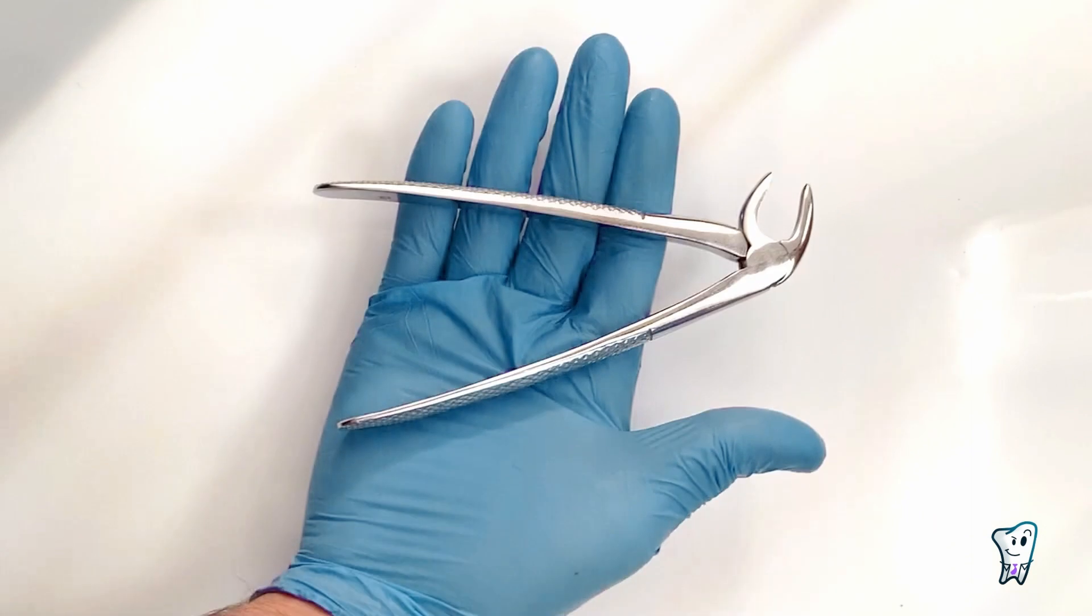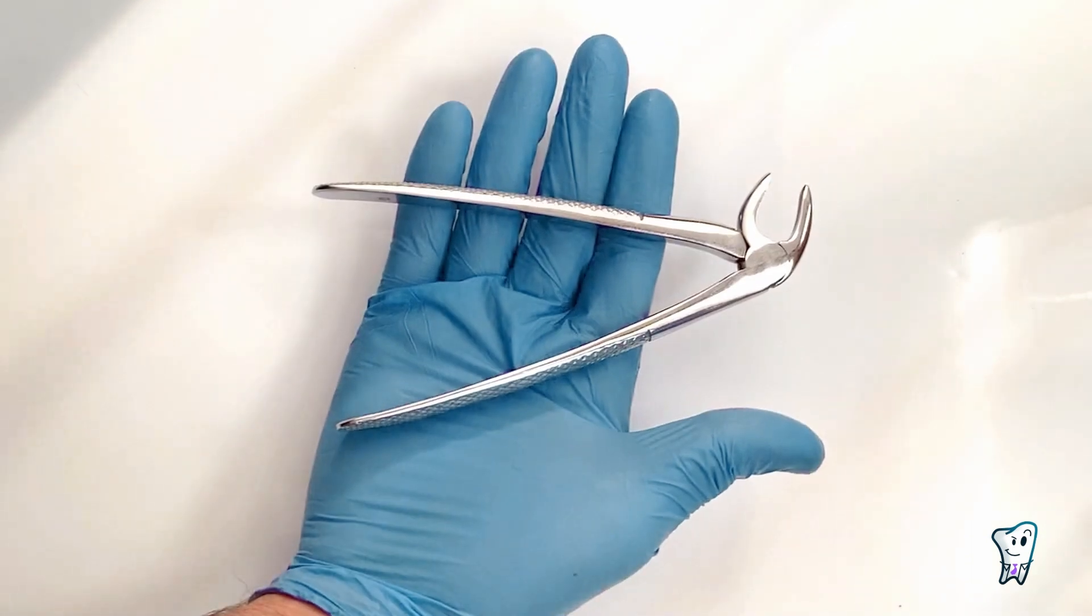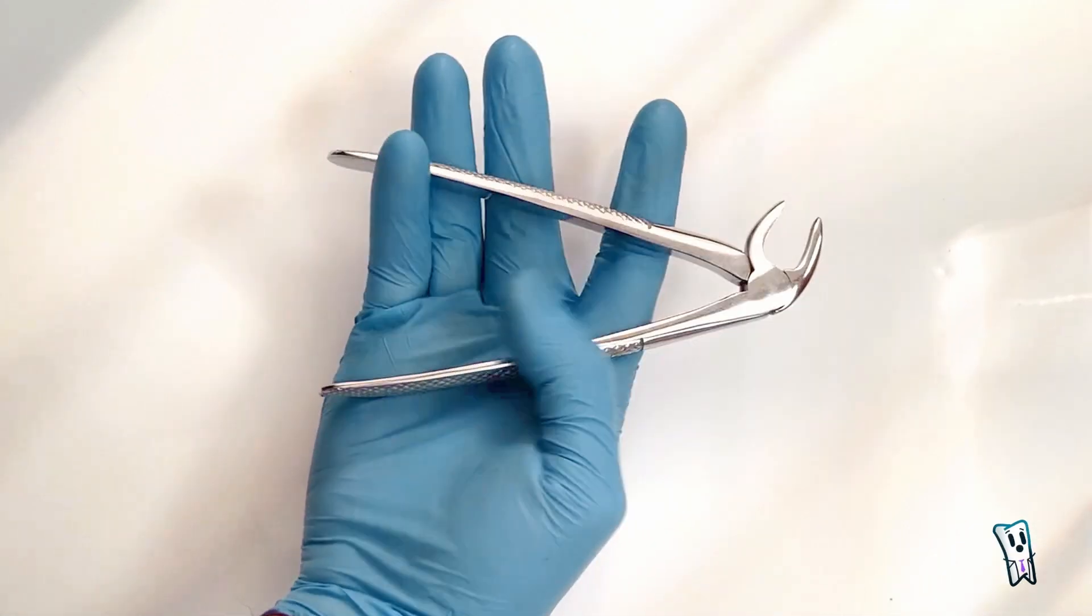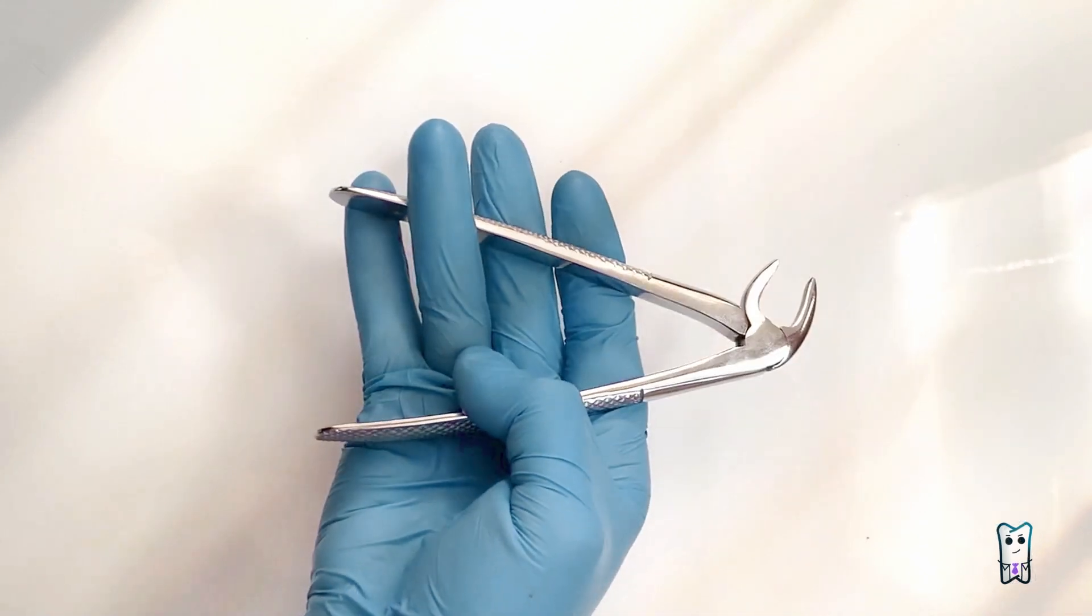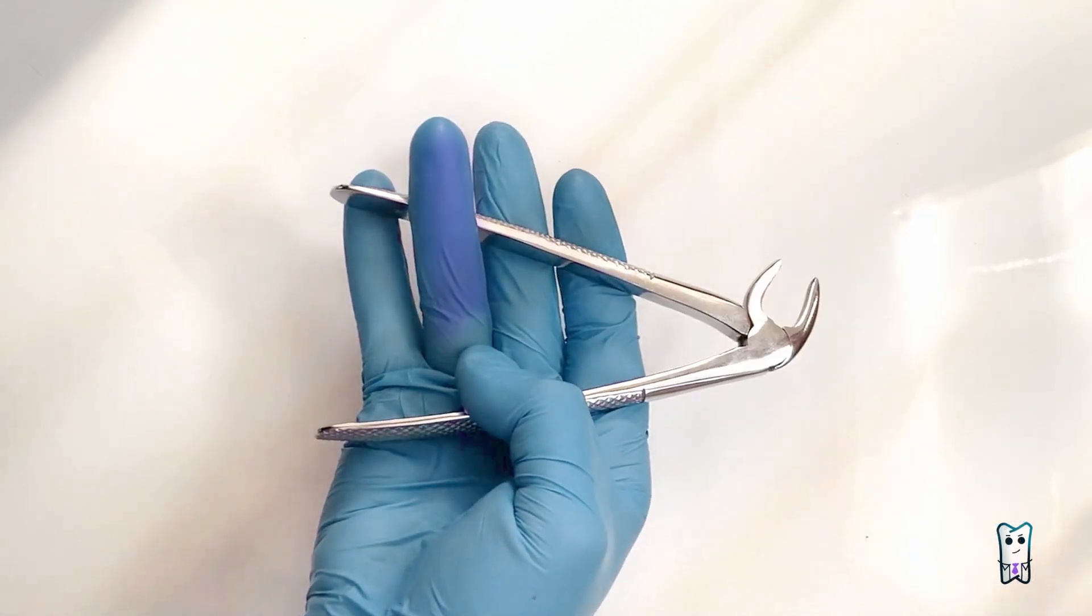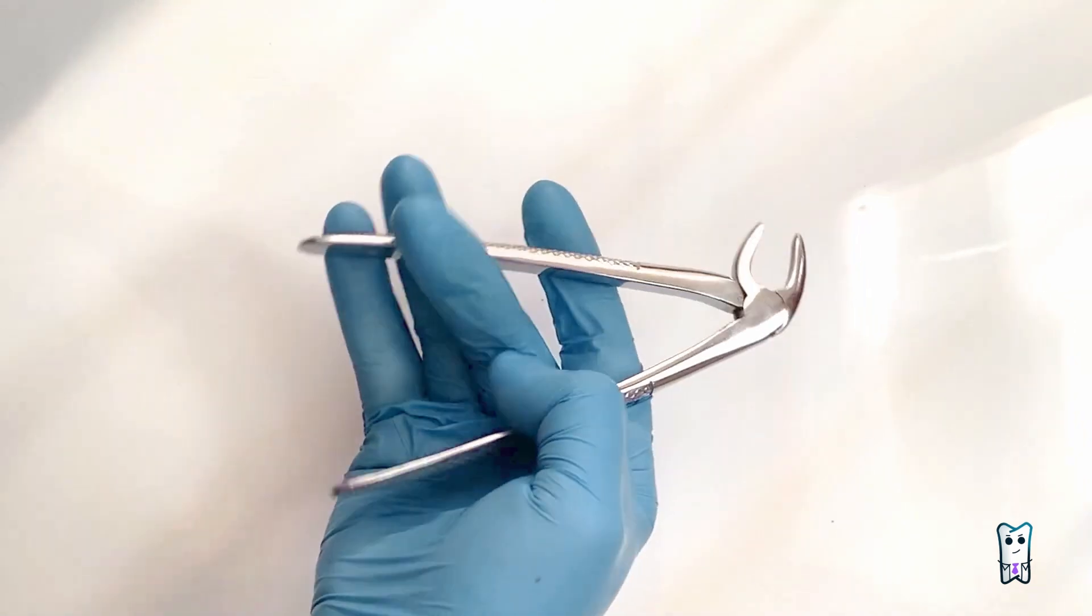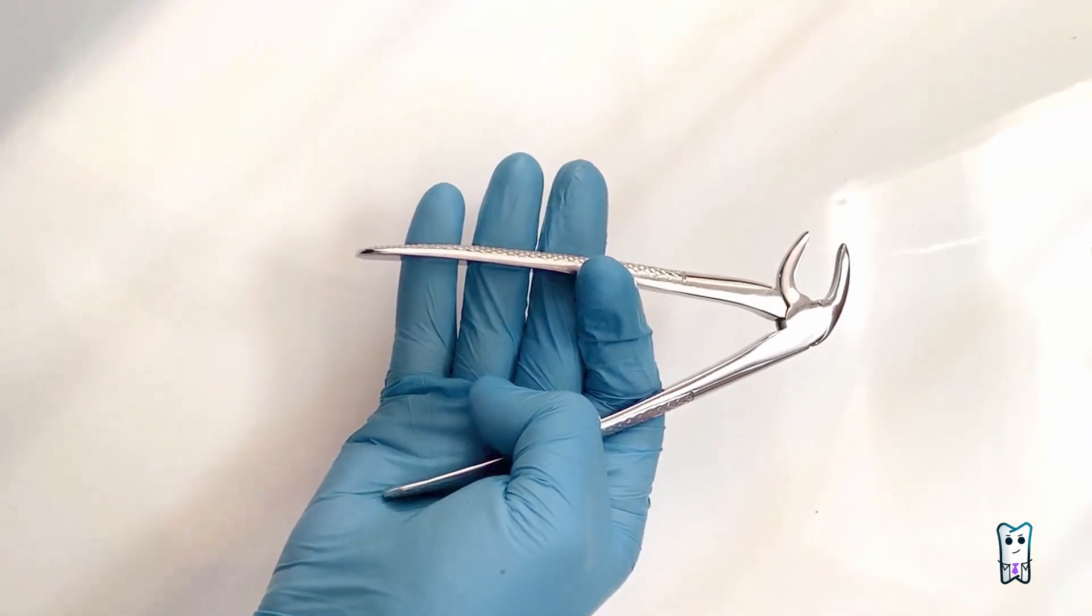Let's say you have chosen the right forceps, but do you know how to hold it? It's pointless to mention that the handles go in your palm and the fingers around the handles. During positioning of the forceps, one of your fingers should be on the inner surface of the handle. This way you can open and close the forceps easily.